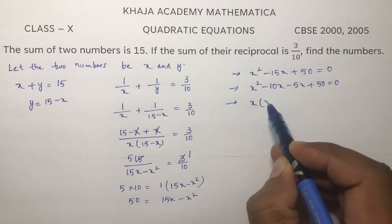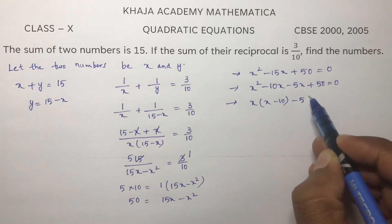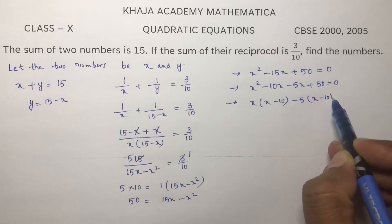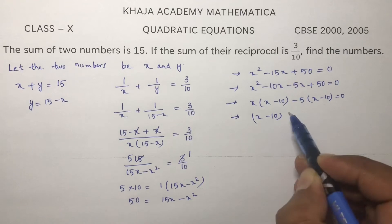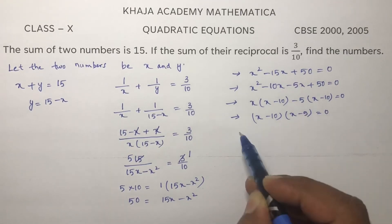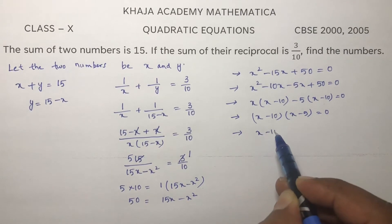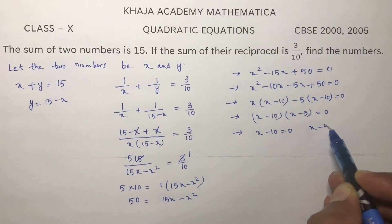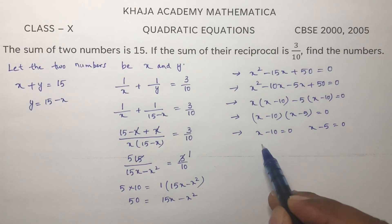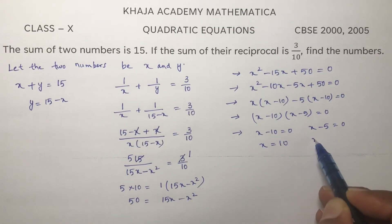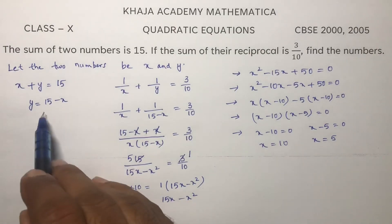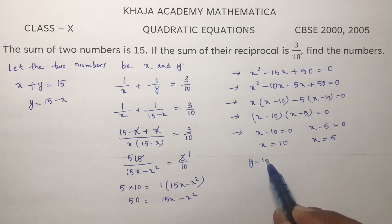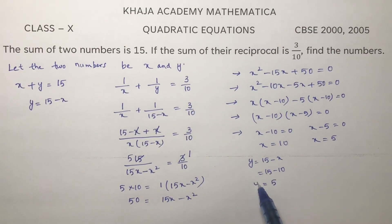Taking x common from the first two terms: x minus 10, and 5 common from the last two terms: x minus 10. So x minus 10 into x minus 5 equals 0, giving x equals 10 or x equals 5. When x is 10, y will be 15 minus x, so y equals 15 minus 10, which gives y equals 5.